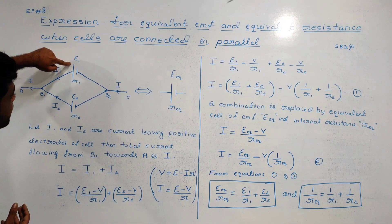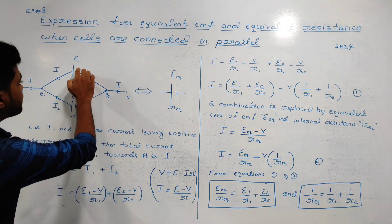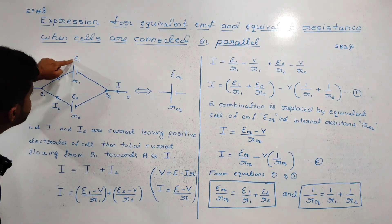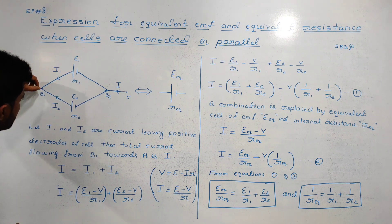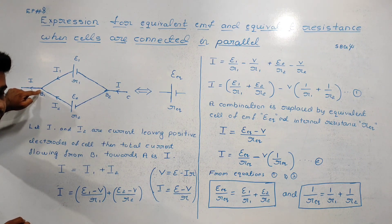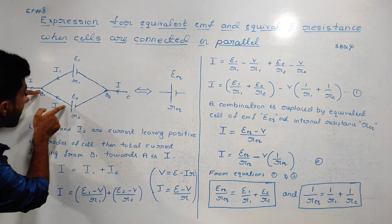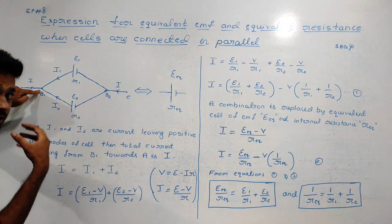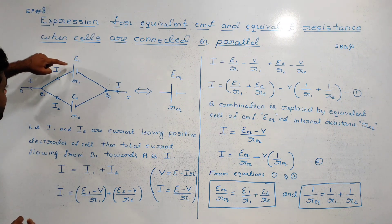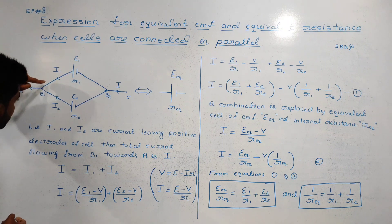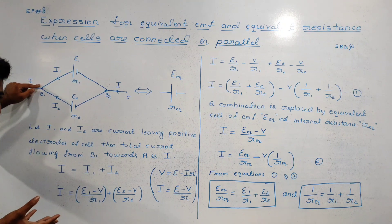The first cell has positive electrode A. This is the positive terminal. This is the negative terminal. The first cell has current I1 flowing toward B1. The second cell has current I2 also flowing toward B1.